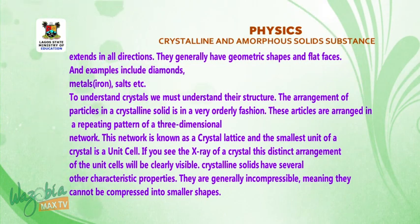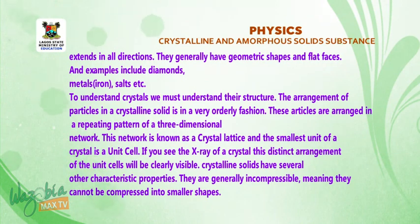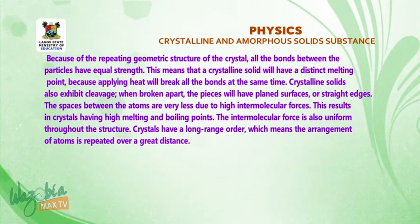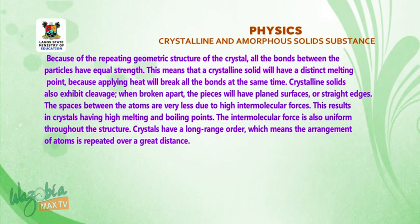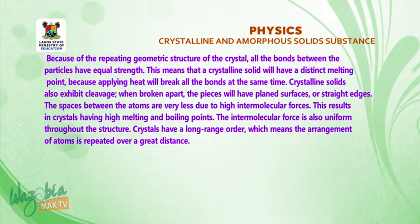This distinct arrangement of unit cells is clearly visible. Crystalline solids are generally incompressible — they cannot be compressed into smaller shapes. Because of the repeating geometric structure, all the bonds between particles have equal strength. This means a crystalline solid has a distinct melting point, because applying heat will break all the bonds at the same time. The intermolecular force holding the molecules together is very strong.